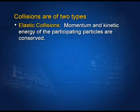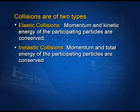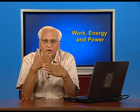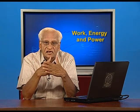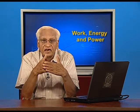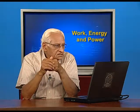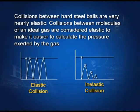Collisions are of two types. Elastic collisions, in which momentum and kinetic energy are conserved. And inelastic collisions, in which momentum and total energy of the participating particles are conserved but kinetic energy is not. Collisions between hard steel balls are very nearly elastic — steel is a very elastic material, so if steel balls collide, those collisions are more or less elastic.